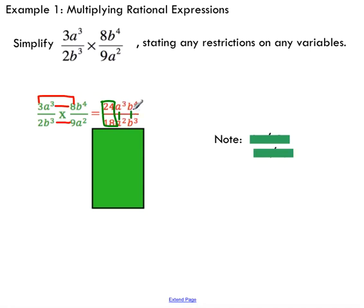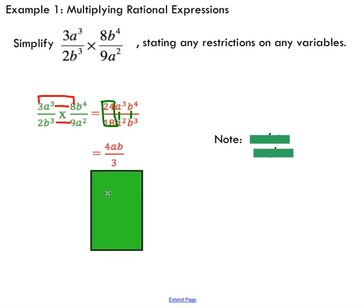So I could apply my exponent law for division of powers, which says I subtract my exponents. And I can do the same thing for my b to the power of 4 and b to the power of 3. So simplifying this line would end up with a to the power of 1, 3 minus 2, and 4 minus 3 would be 1, so I've got a, b. If I just reduce this fraction to lowest terms, I'd end up with 4 over 3.